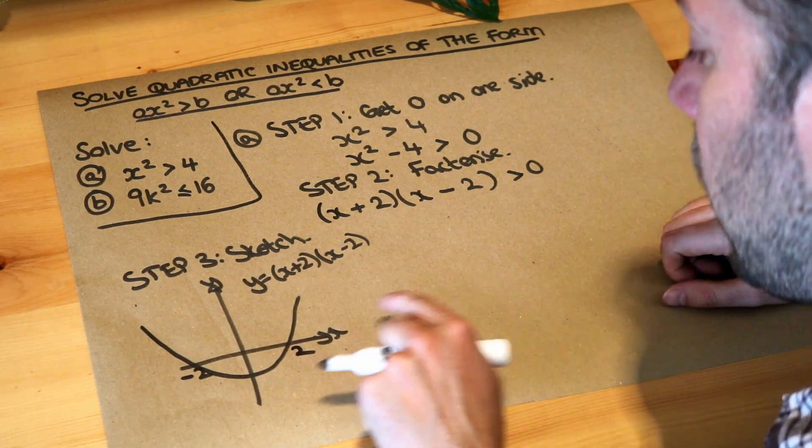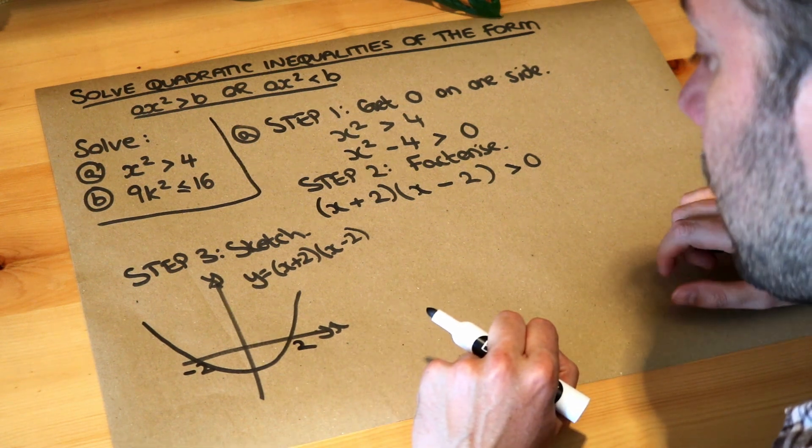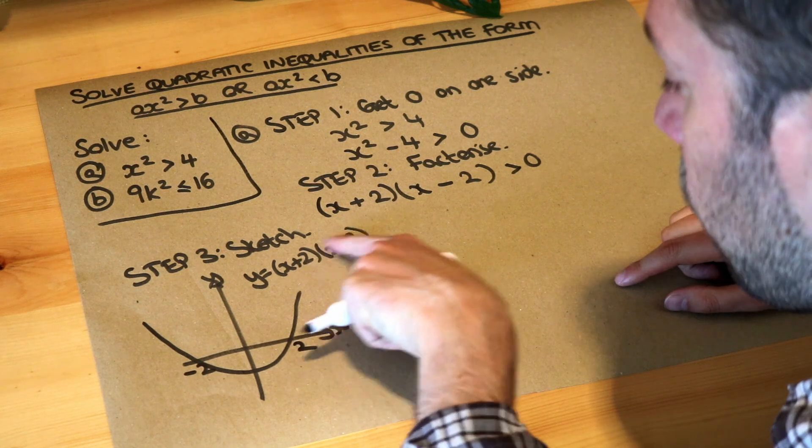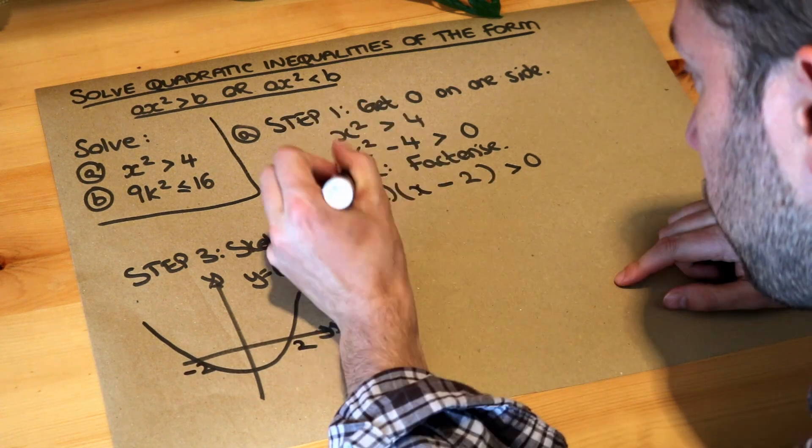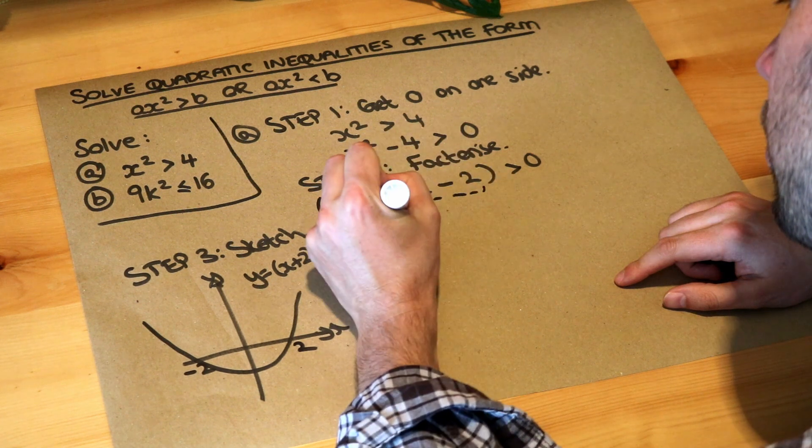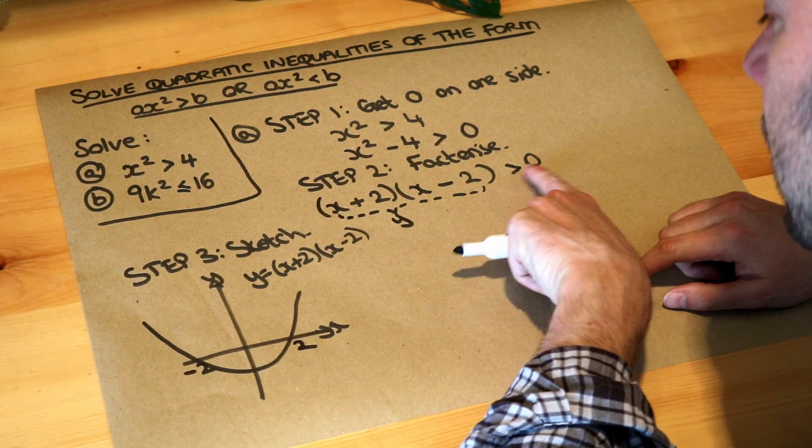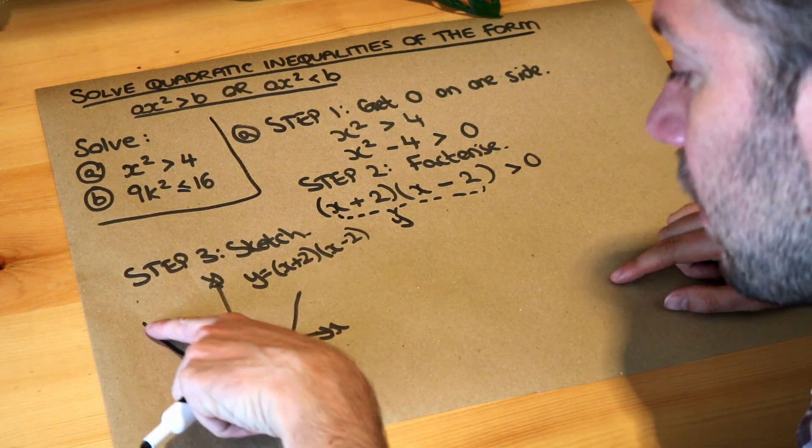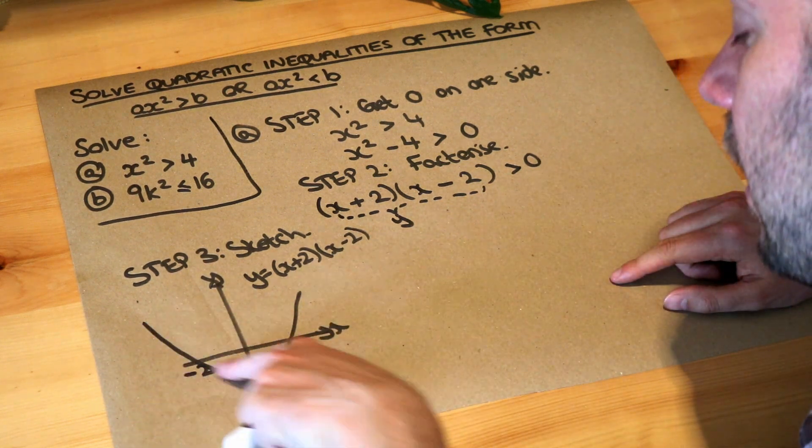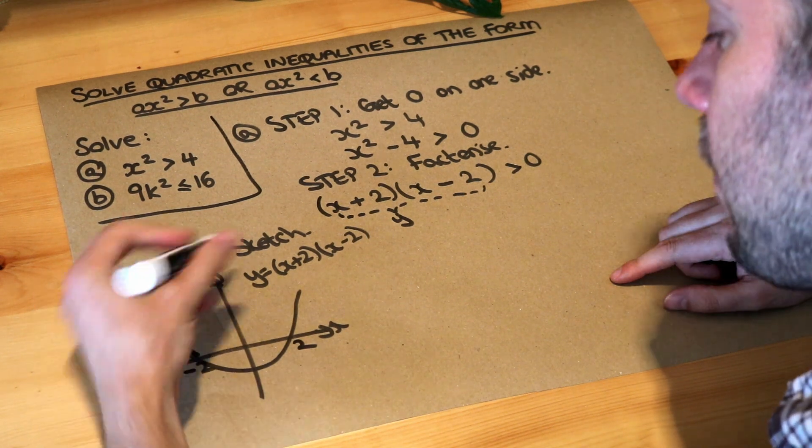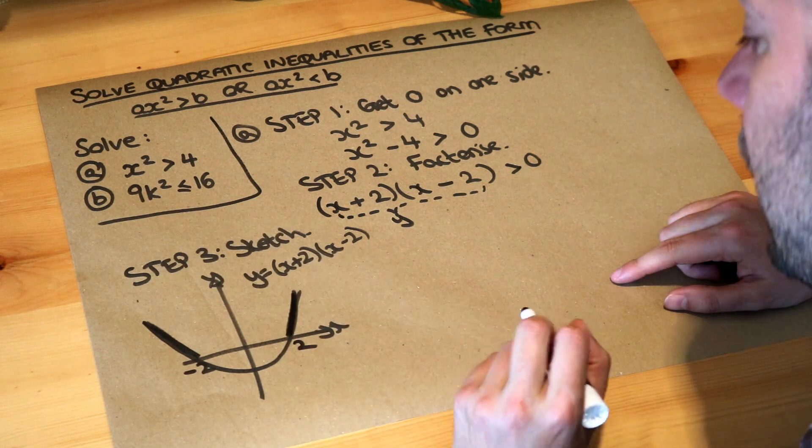And then finally, we use the sketch to solve. So we're saying that the y value—all of that is the y value of our sketch. Where on this graph is the y value greater than 0? What parts of this line is the y value greater than 0? Well, we can see the y value is greater than 0 here and the y value is greater than 0 here.